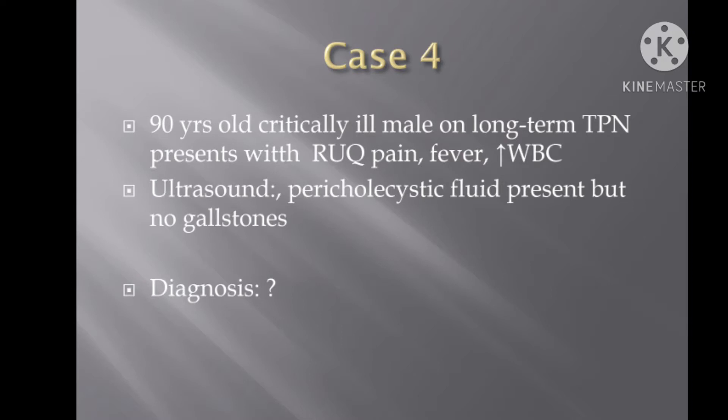He is on total parenteral nutrition. Now, he started complaining of pain in the right upper quadrant abdomen along with fever, and when you investigate you find the patient is also having leukocytosis. On radiological investigation, on ultrasound, you find there is fluid around the gallbladder but there is no gallstone.